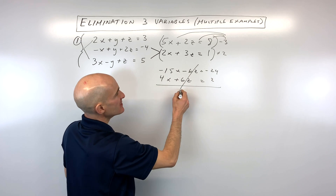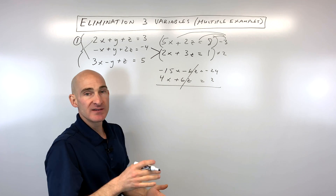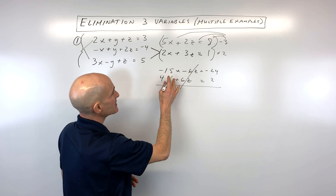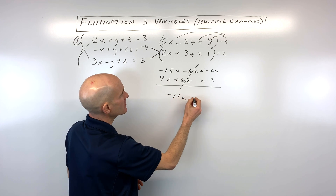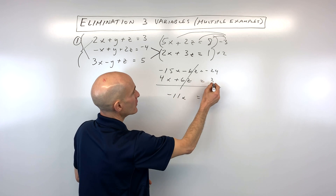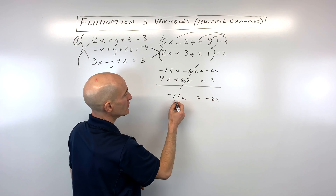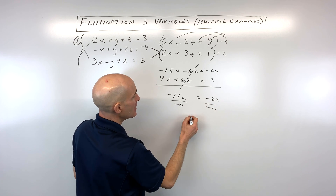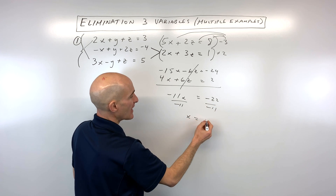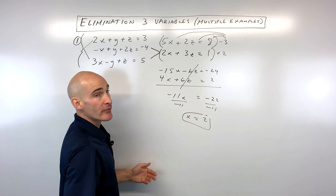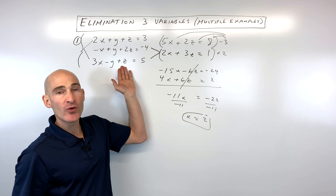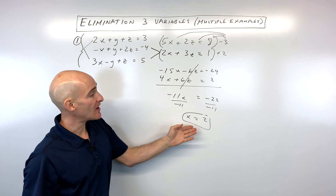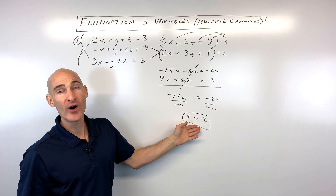Now if we add, the z's cancel. Negative 15x plus 4x is negative 11x, and negative 24 plus 2 is negative 22. Dividing both sides by negative 11, we get x equals 2. So we went from 3 variables and 3 equations, down to 2 variables and 2 equations, down to 1 variable and 1 equation.